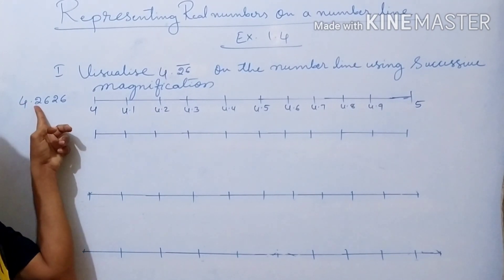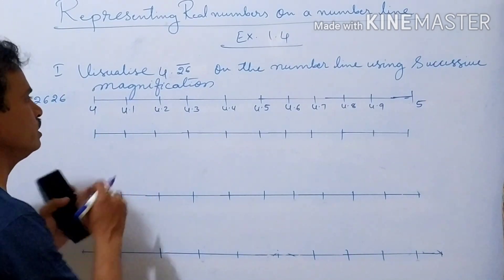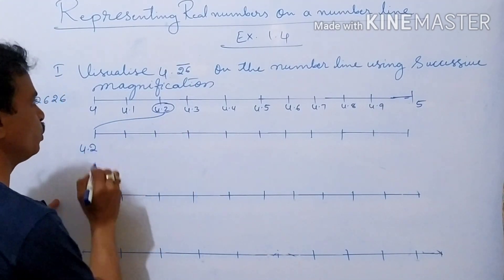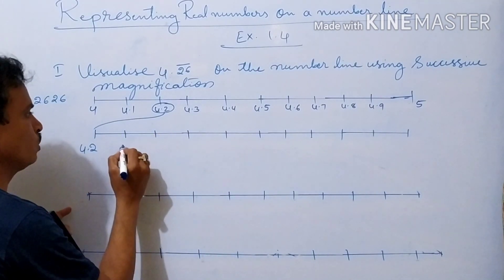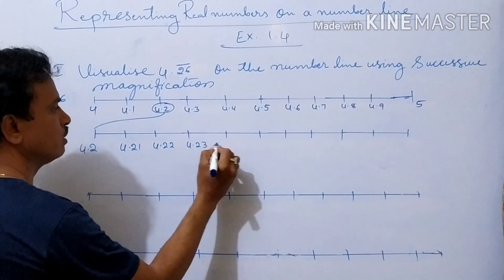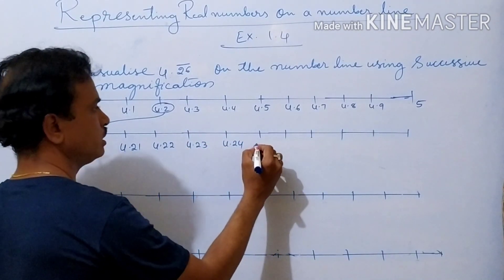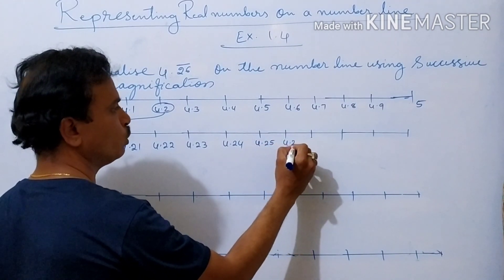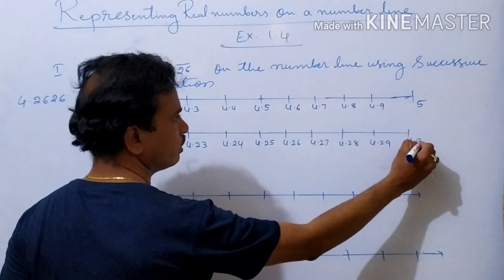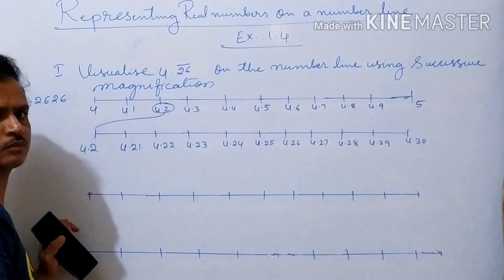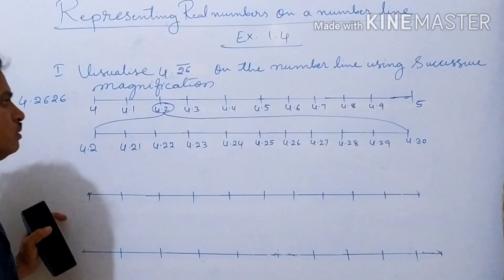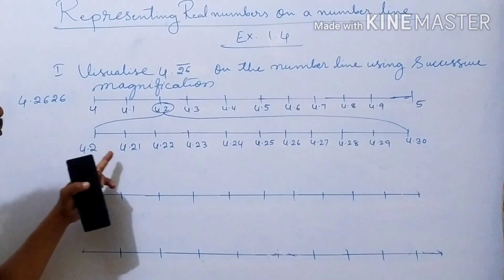4.2 is there here. Again in this interval you should make 10 parts. Take 4.2 here. Then: 4.21, 4.22, 4.23, 4.24, 4.25, 4.26, 4.27, 4.28, 4.29, then 4.30 (or 4.3). These 10 parts are done. 4.26 is here.